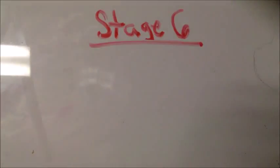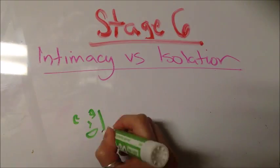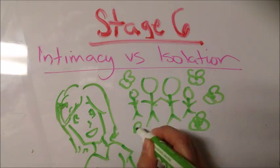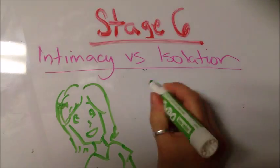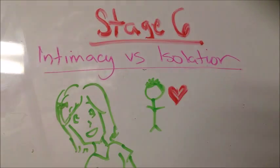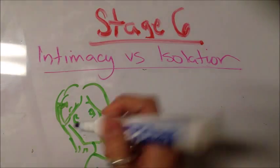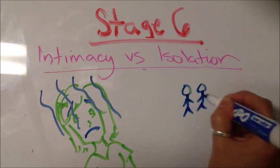Stage 6, Intimacy versus Isolation. This occurs once young people have established their identity. They then become capable of forming strong friendships with others and even long-term commitments. However, those who can't form intimate relationships develop a sense of isolation and exclude themselves from others.